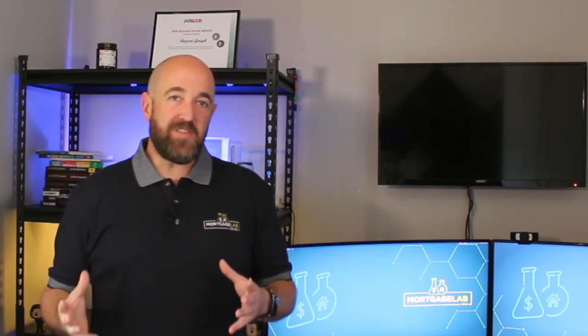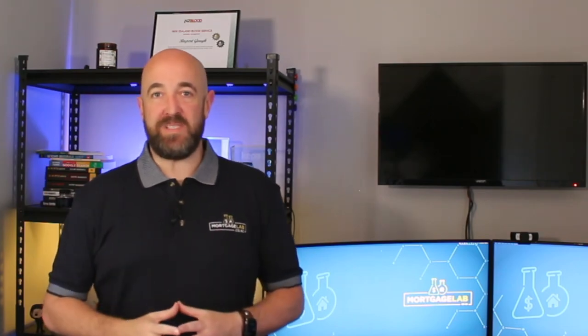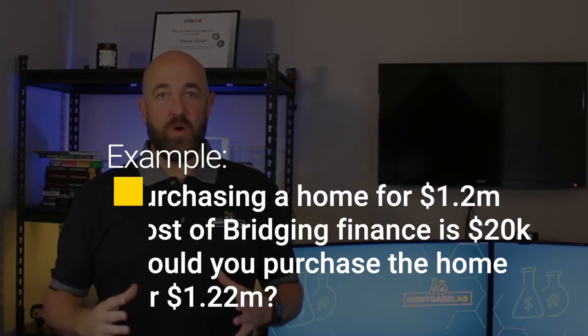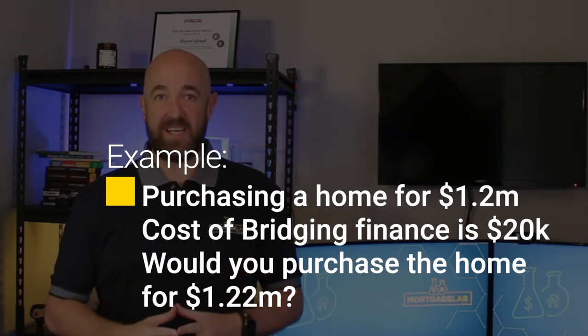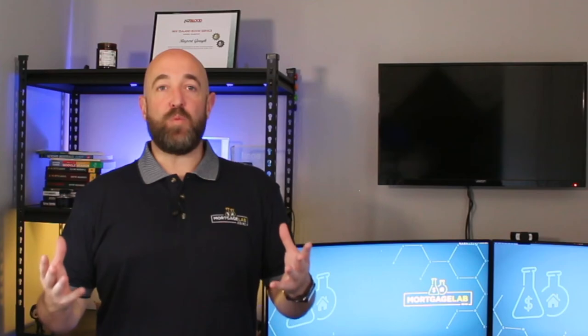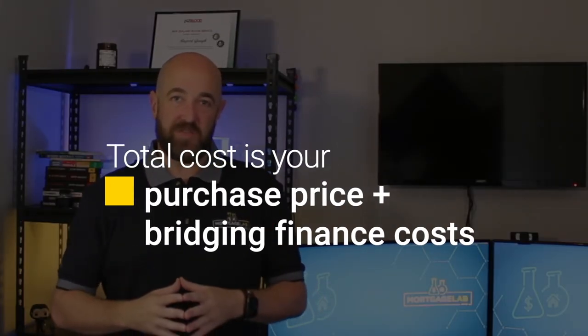When it comes to the additional costs of bridging, try not to think of them as painful expenses, rather think of them as a cost of doing business. Let's say you're buying a new home for $1.2 million and the bridging loan is going to cost you an additional $20,000. Would you have paid $1.22 million for the new home? Odds are, in most circumstances, you would. The cost of your new home is just the purchase price plus the additional cost of bridging.